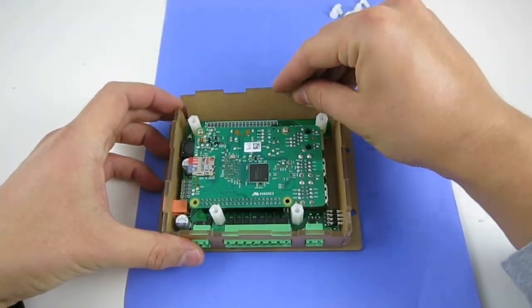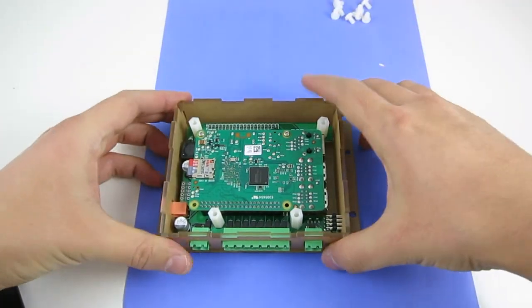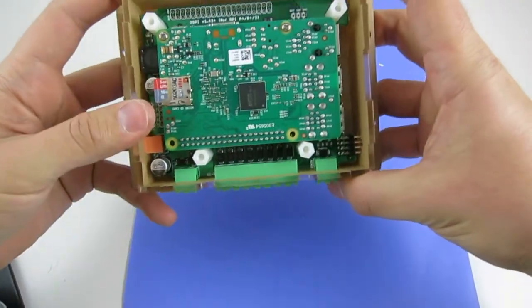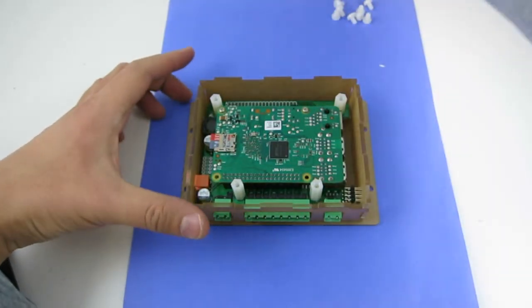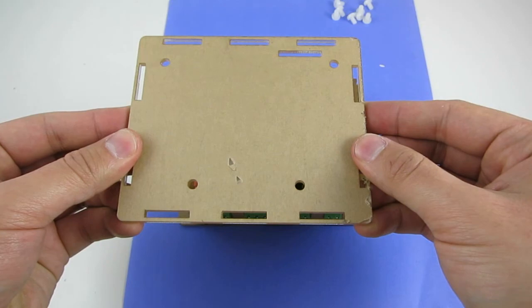And then finally, the back piece. Now we have all the four sides basically assembled. And then the last step is to install the top.